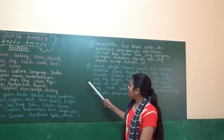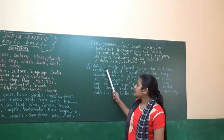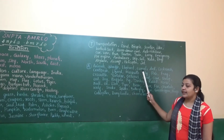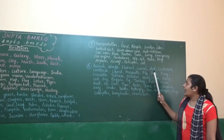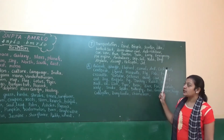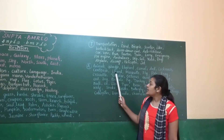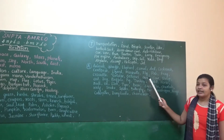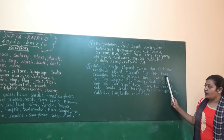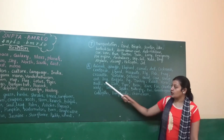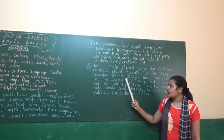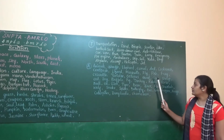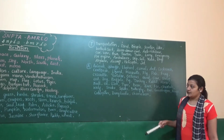Next we will go with A — Animals: giraffe, elephant, camel, cockroach, centipede, lizard, mosquito, fly, fish, frog, crocodile, tortoise, octopus, goat, cow, sheep.